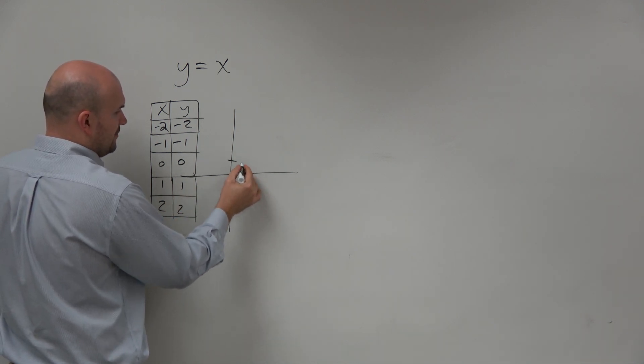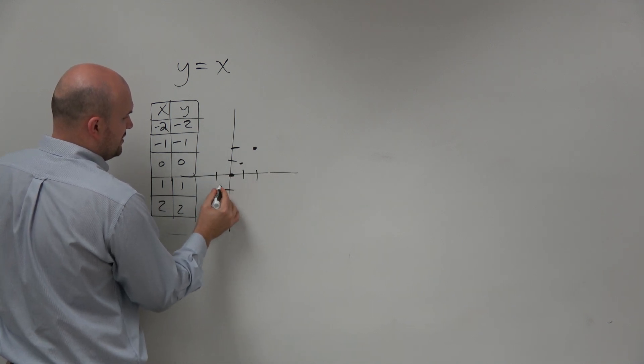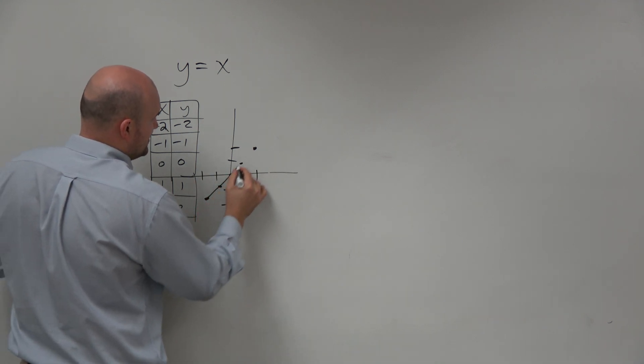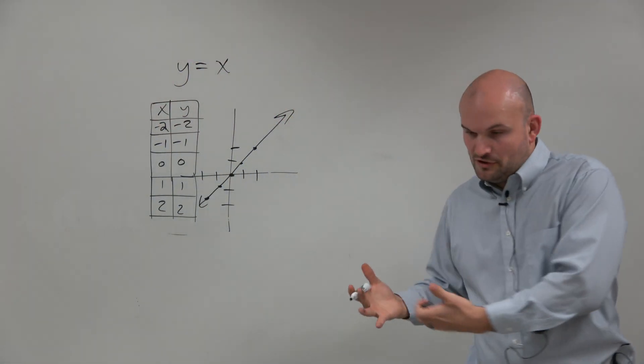Therefore, at (1, 1), at (2, 2), at (0, 0), at negative 1, negative 1, and negative 2, negative 2, you can see that's what the graph looks like. Whatever x equals, y equals. So that's the identity function.